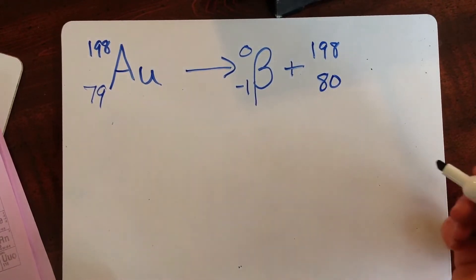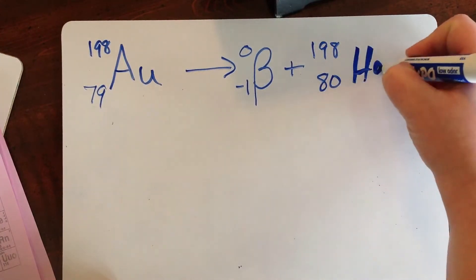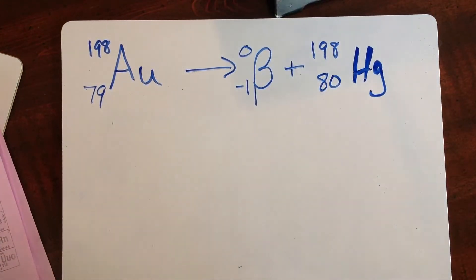So atomic number 80 is Hg. So whether it's alpha decay, beta decay, positron decay, or anything else, the sum of the superscripts has to be the same on both sides. The sum of the subscripts has to be the same on both sides.